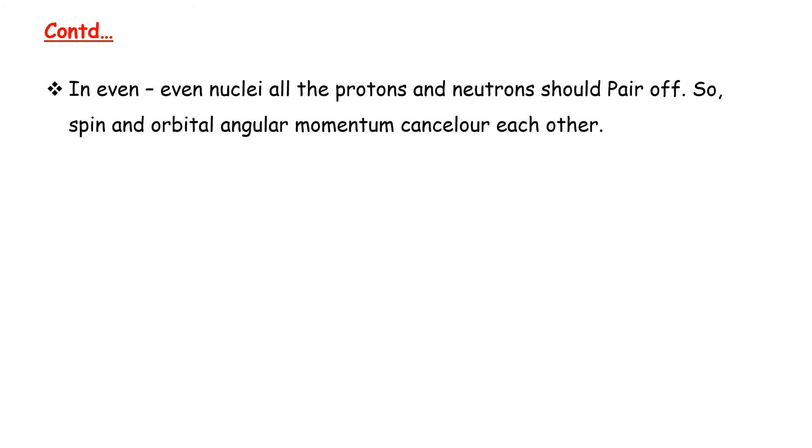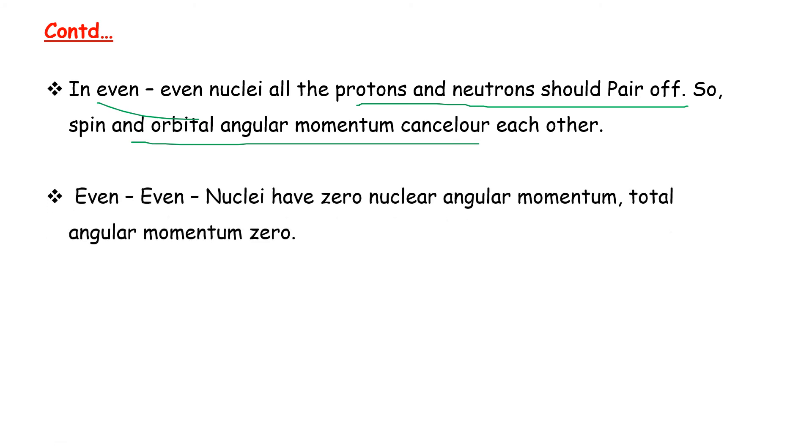In even-even nuclei, all the protons and neutrons should pair off, so spin and orbital angular momentum cancel each other. Even-even nuclei have zero nuclear angular momentum.